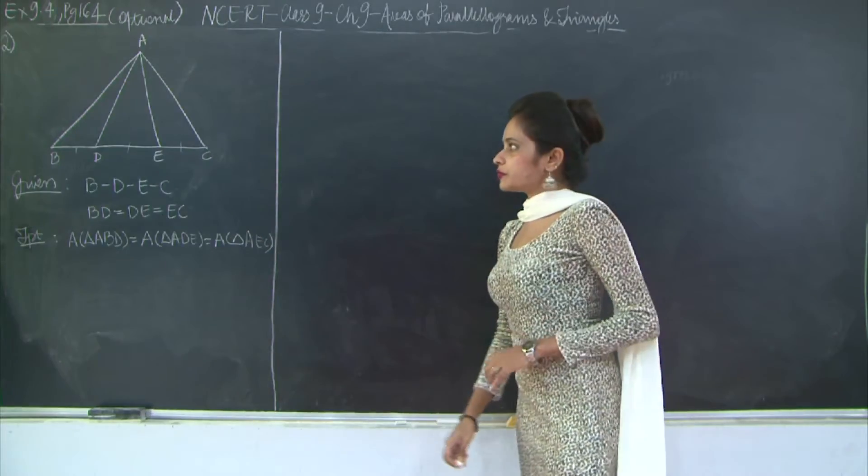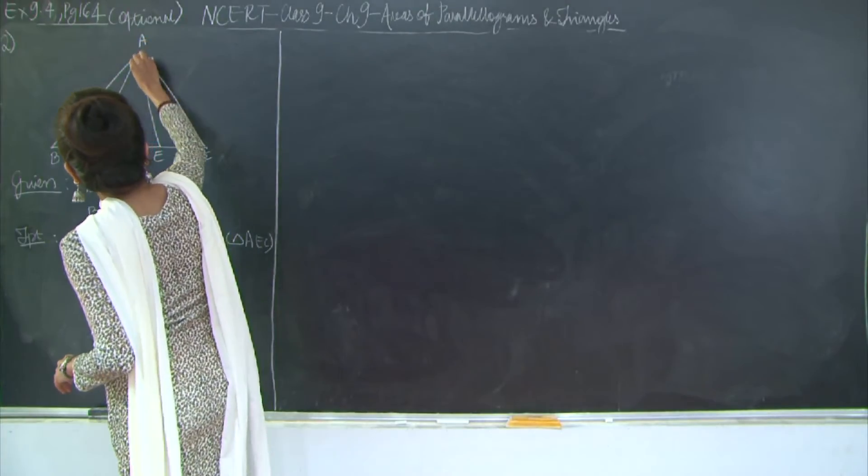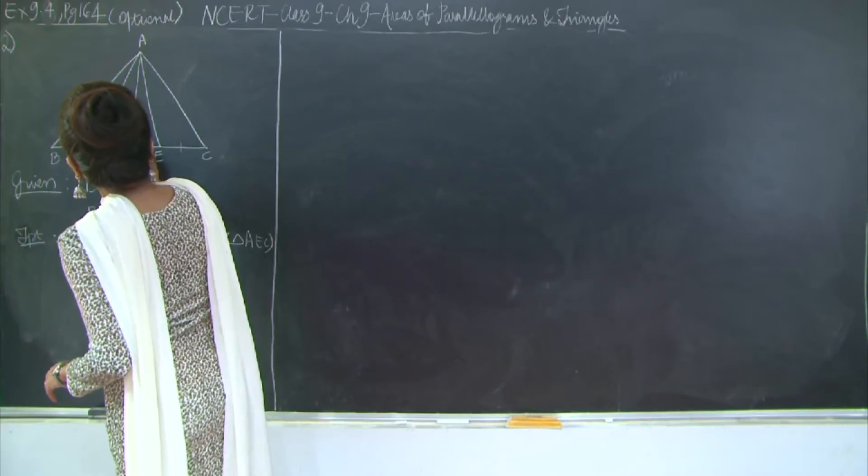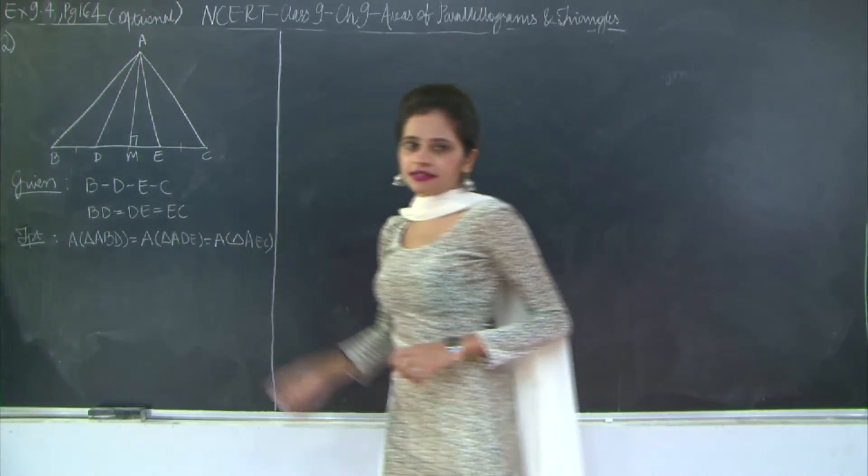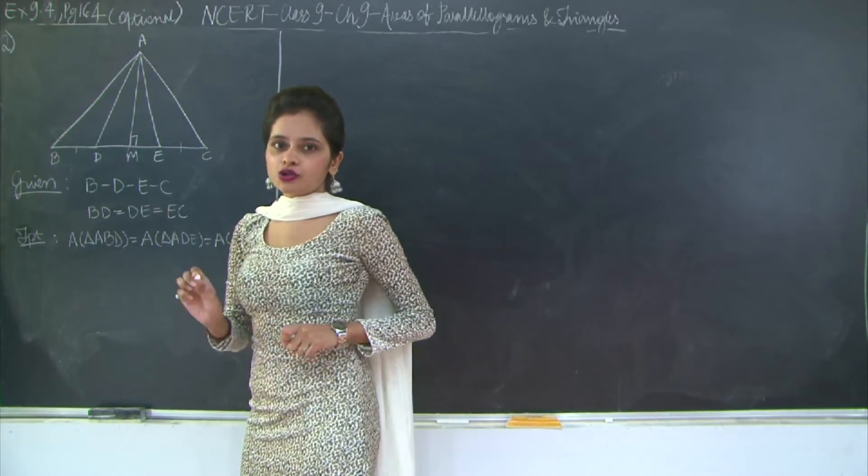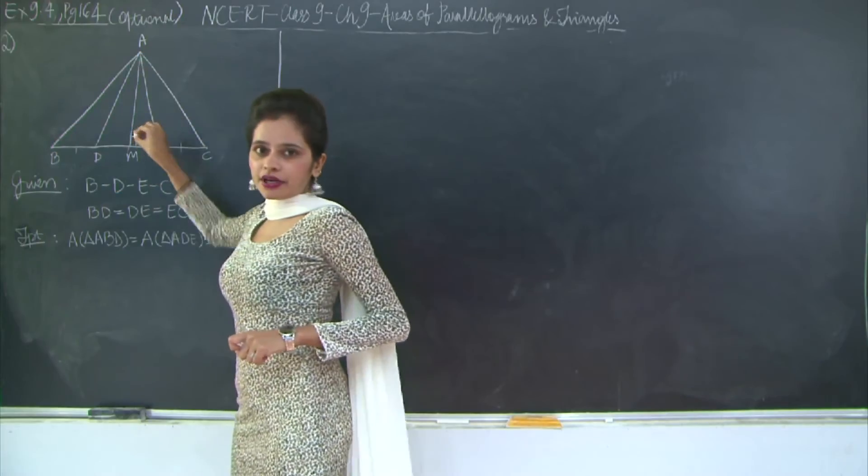So how do we prove this? The most simple way to do this is to draw a perpendicular. So I will draw AM perpendicular to BC. Now if you notice, area of triangle ABD is half into base into height which is half into BD and the height is AM.